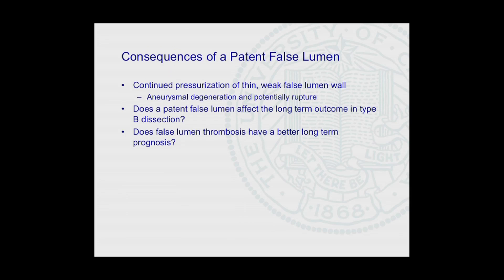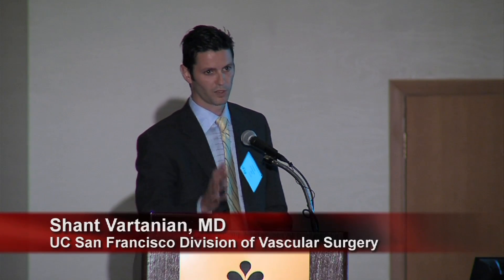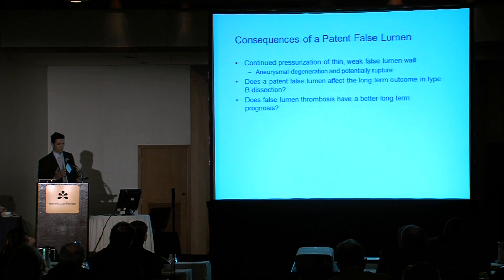What about flow within the false lumen? It's not a stretch to think that when you have continued perfusion within that weakened segment of aorta — certainly weaker than the native undissected aorta — you will develop aneurysmal degeneration and potentially rupture. Does a patent false lumen affect the long-term outcome in type B dissections, and does false lumen thrombosis carry a better long-term prognosis? This has become a very important question because in many new TEVAR studies addressing treatment of chronic aortic dissection, this has become the surrogate outcome for late events.